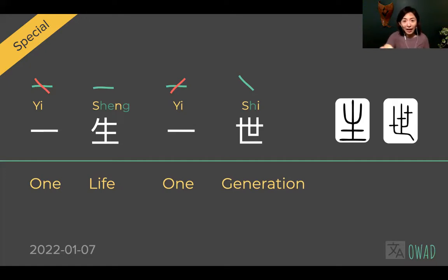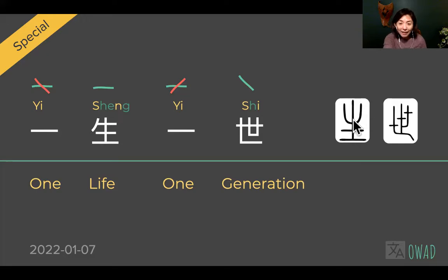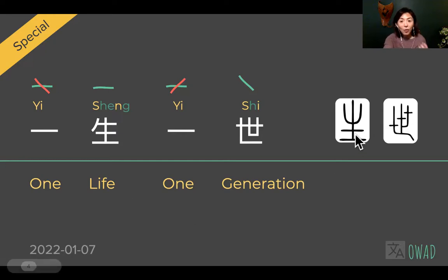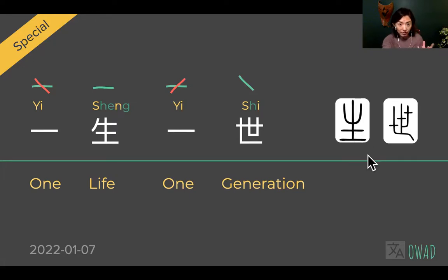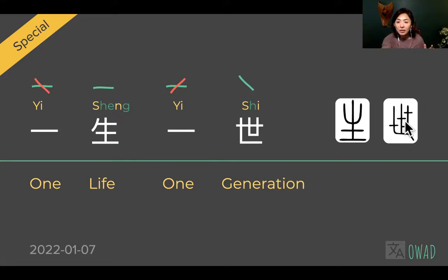So it becomes YI SHENG YI SHI rather than the more difficult YI SHENG YI SHI. Number one is easy — just a horizontal line. Now SHENG and SHI are worth explaining. The original form of SHENG looks like a plant, because Chinese is an agriculture-based culture. Life to us was this form of a plant rising up from the soil — still rooted, still alive, still growing. That's our concept of life.